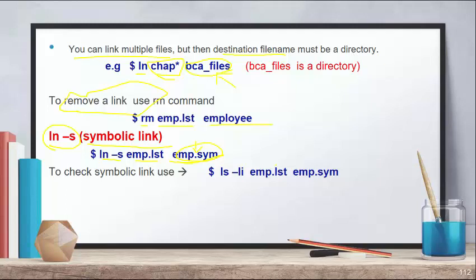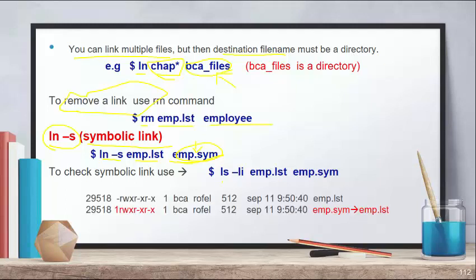For a soft link, the inode number is also the same, but additionally a symbol is shown in the output. Using ls -li on the soft-linked files, the output shows the same inode number, and the linked file displays an arrow symbol pointing to the original file — for example emp.sim -> emp.lst. This arrow symbol in the output tells you it is a symbolic link.